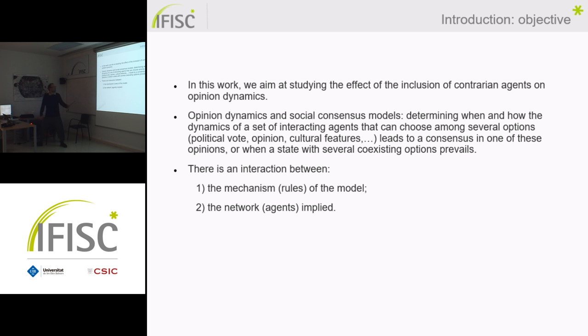The objective of this work is to study the effect of the inclusion of contrarian agents in the classical environment of the noisy voter model. The noisy voter model is part of the subfield of opinion dynamics and social consensus models — models which study what happens in a social system where agents have to agree or not agree on opinions, and whether consensus is reached. Social consensus models also cover cultural features, media influences, and so on, with interaction between mechanisms and the network of agents.